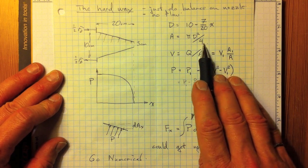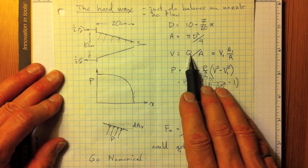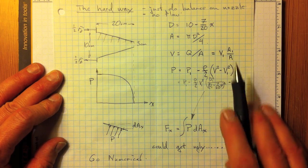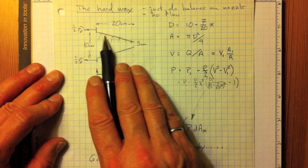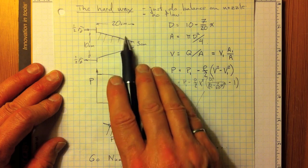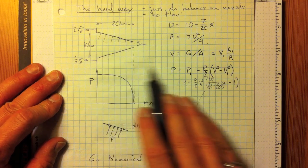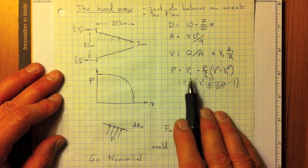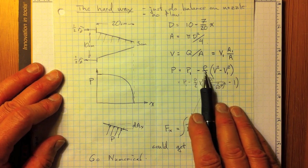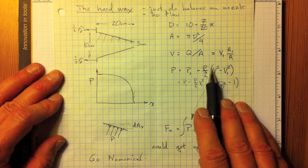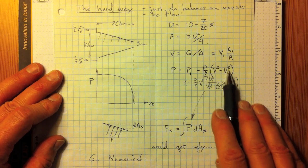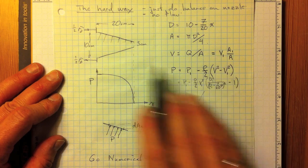Area is pi d squared over 4. Velocity is q over a, or v1 a1 over a. So, as we go along here, depending on what the area is at each step of the way, we can calculate what the velocity is. The pressure at each location will be p1 minus a term related to what the velocity is just locally, compared to the velocity at the inlet at 1.